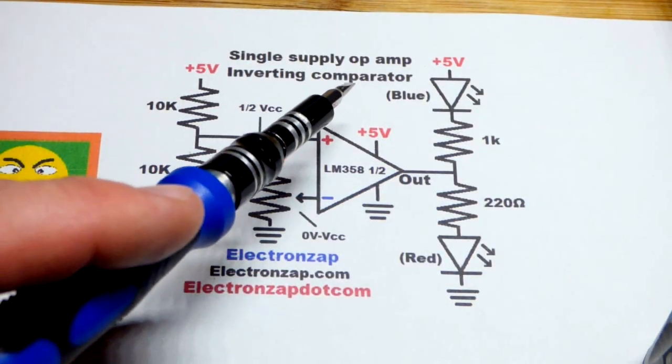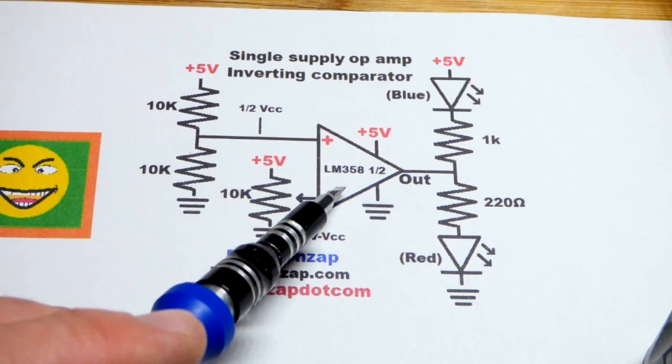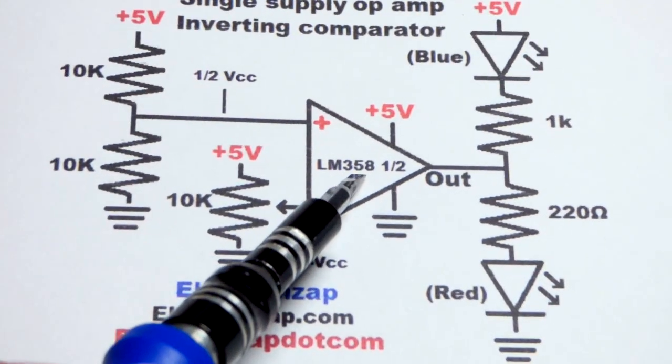So now in this video, we're going to make another comparator circuit with an op-amp. Again, we're going to use a single supply op-amp, the LM358.